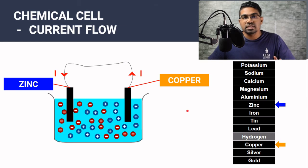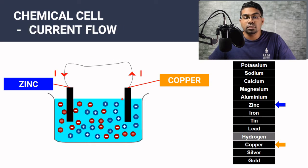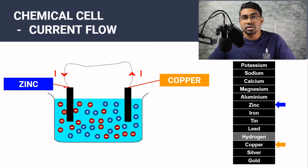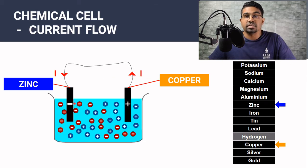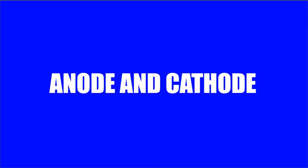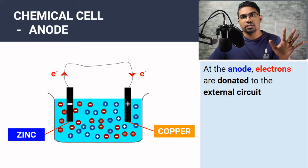Current flow is in the opposite direction of electron flow. We've established that electrons flow from zinc to copper, therefore current flows from copper to zinc. By convention, current flows from the positive terminal to the negative terminal, so we can now assign our terminal signs: copper will be the positive terminal and zinc will act as the negative terminal.